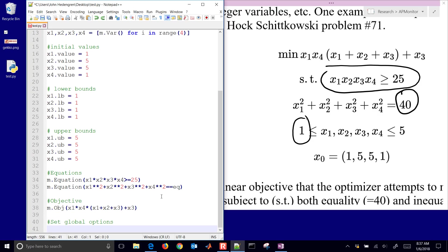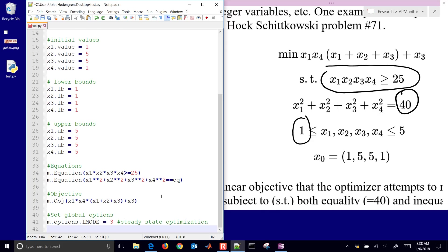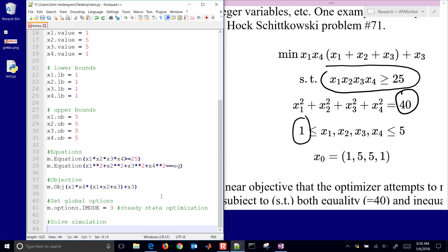And now I can solve it after I set some options. So if I want to, I can change the I mode. This changes the mode that you want to run the problem in. And there's a little bit more information on this in the documentation. I'll just set it equal to 3, which is steady state optimization. And then I'll solve it.